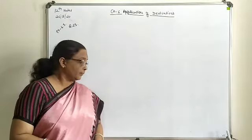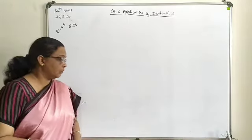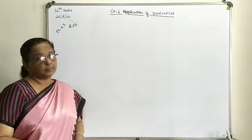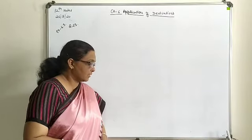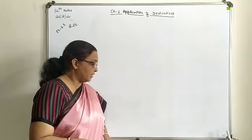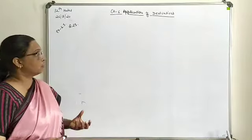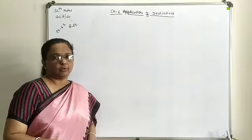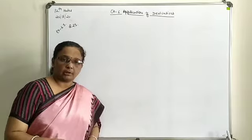Today we are going to complete the remaining questions of Exercise 6.5. Let us continue with question 23, which is one of the important questions. Here we have to prove that the volume of the largest cone that can be inscribed in a sphere of radius R is 8/27 of the volume of the sphere. Two things are to be discussed: the volume of the sphere and the volume of the cone, linked with coefficient 8/27.